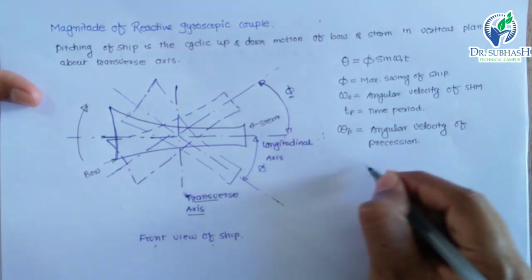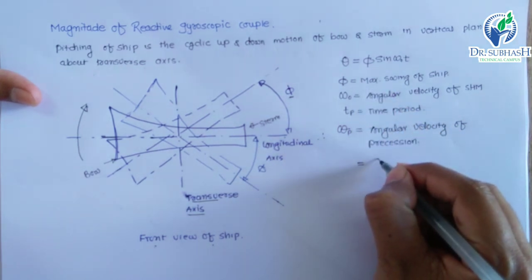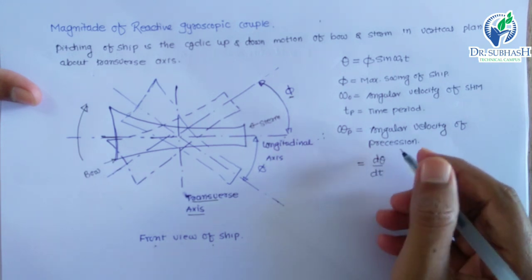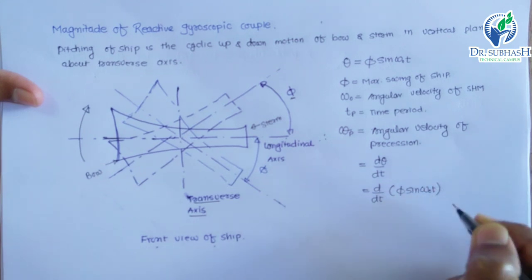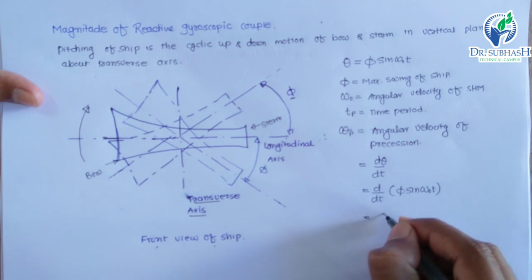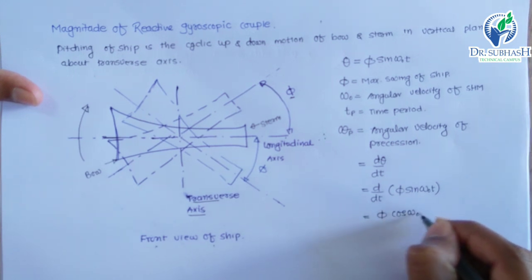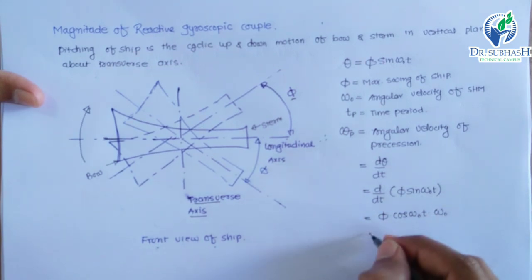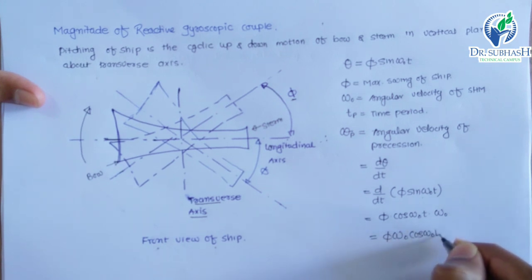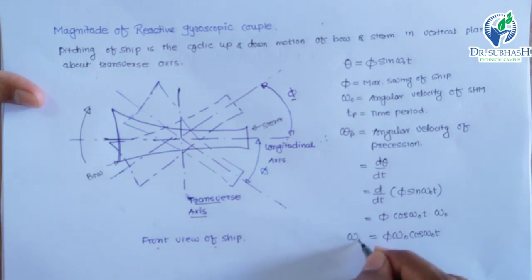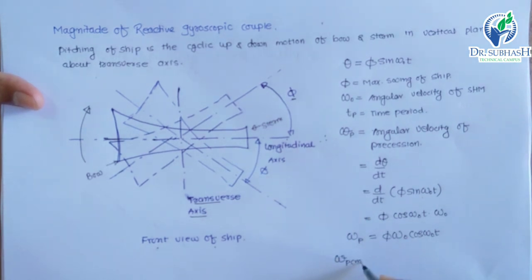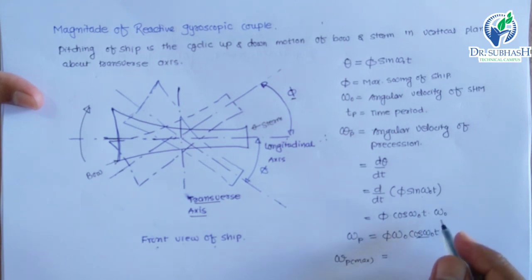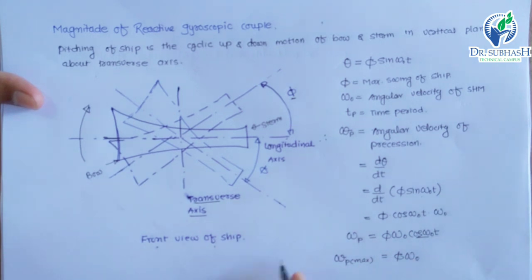Now, omega_p is nothing but d(theta)/dt. So d/dt of theta equal to phi into sin(omega_0 into t) gives phi into cos(omega_0 into t) into omega_0. So omega_p equals phi into omega_0 into cos(omega_0 t). This is the precessional velocity of the ship. We know the maximum precessional velocity is omega_p_max, where cos(omega_0 t) equals 1, so maximum velocity is phi into omega_0.